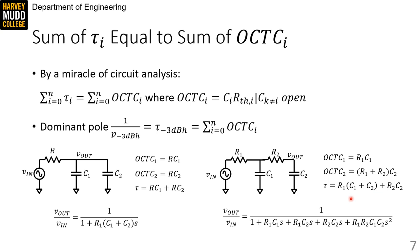So that means our estimated time constant is going to be R1 times C1 plus C2 plus R2 times C2.